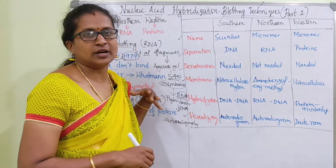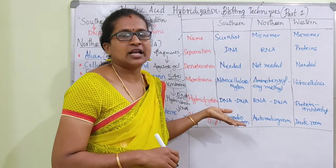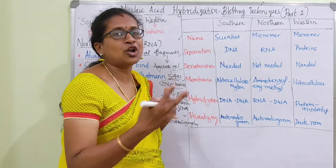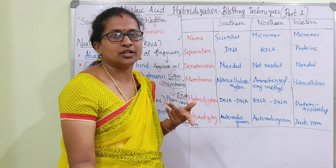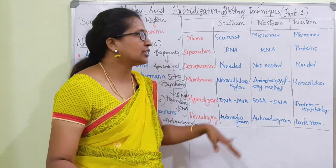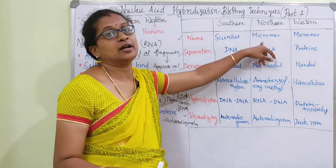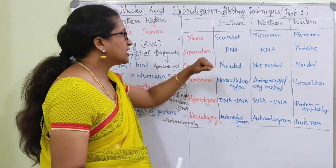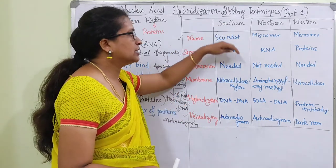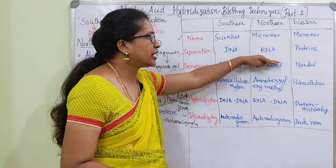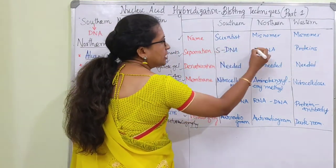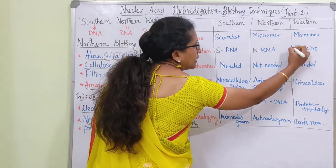Northern and western are misnomers - there is no specific reason for these names except directional convention. For separation: southern is for DNA, northern is for RNA, western is for proteins. So S for DNA, N for RNA, W for proteins.